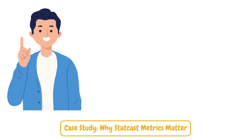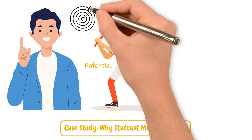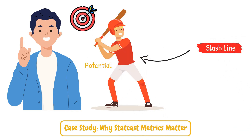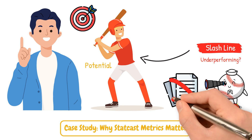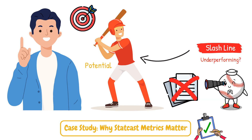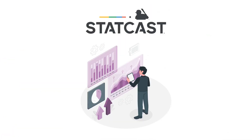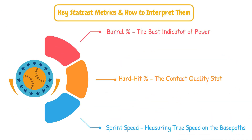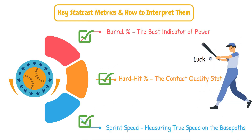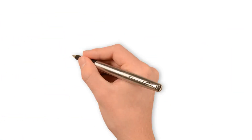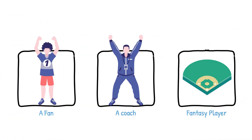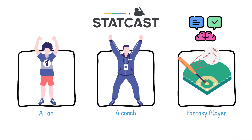StatCast metrics allow us to understand a player's potential and give us an accurate understanding of how we got to his final slash line. Is a player underperforming, and will that turn around? Looking at a stat sheet just doesn't give us that full answer, so we need to rely on these metrics to make informed decisions in player development and acquisitions. StatCast isn't just a tool for analysts — it's a window into the game's hidden details. By understanding metrics such as barrel percentage, hard hit percentage, and sprint speed, we can better evaluate players, separate luck from skill, and even predict future success.